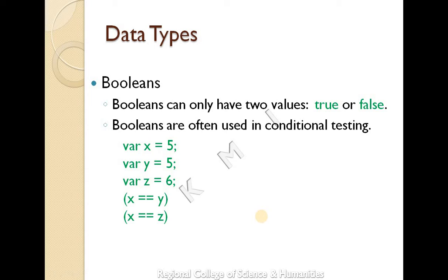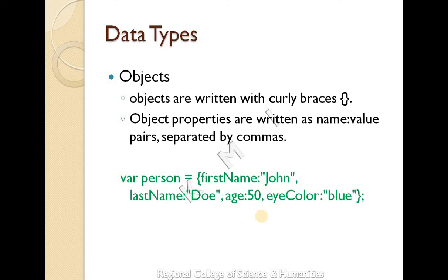Conditional testing uses the boolean data type. Next, object data type. Object is written with curly braces. It uses name-value pairs. For example: person equal to, then curly braces — first name: John, last name: value, age: value. These are name-value pairs inside an object.